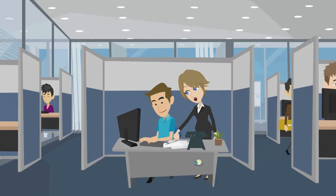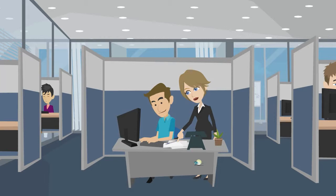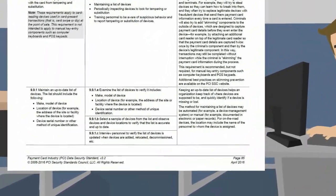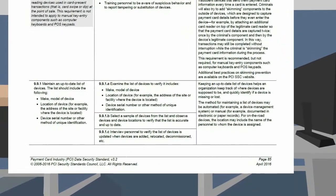So Paula needs to find a solution that enables her to deploy the tablets and mobile payment devices in a secure manner so that she is able to track the devices and therefore comply with PCI DSS 3.2 requirement 9.91, which states: maintain an up-to-date list of devices.